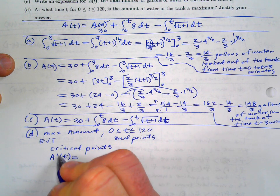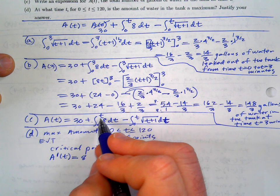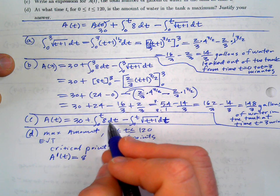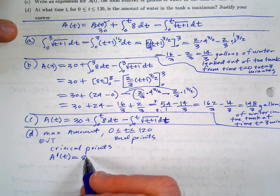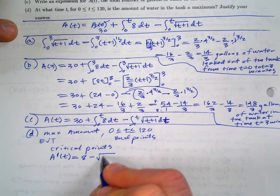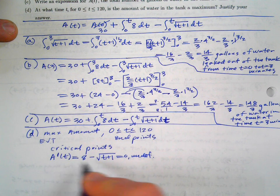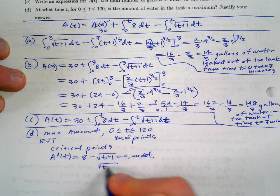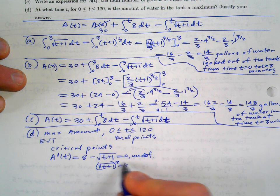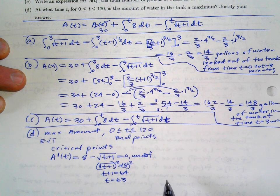A'(t) is the derivative of the rate model: by the Fundamental Theorem, that's 8 minus √(t+1). Set that equal to zero: √(t+1) = 8, so t+1 = 64, giving t = 63. That's your critical point. You should write A'(t) = 8 − √(t+1) = 0 to show your work.